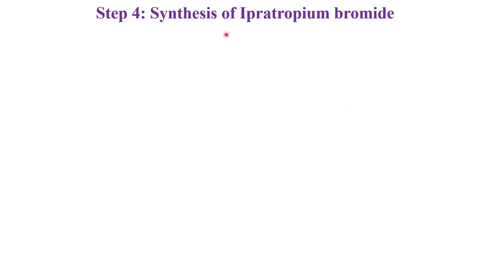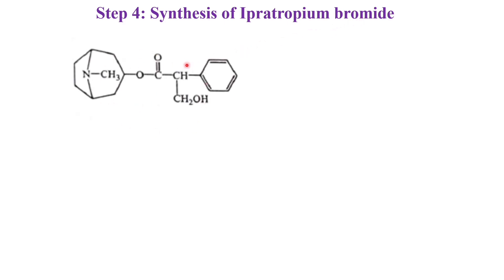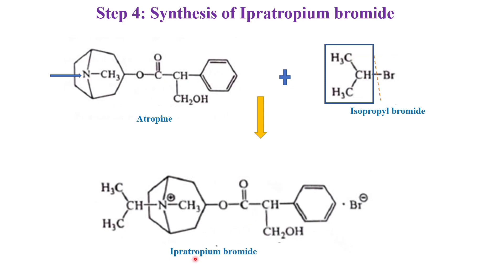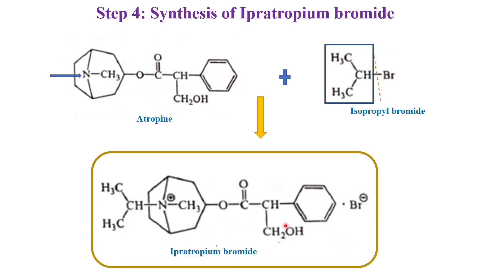The last step is synthesis of Ipratropium bromide. We have taken atropine and added isopropyl bromide. By this addition, the isopropyl group is added to the nitrogen of atropine, forming a quaternary nitrogen compound that is called Ipratropium bromide. That is all about the synthesis of Ipratropium bromide.